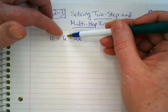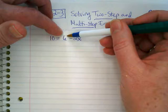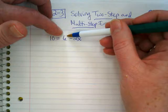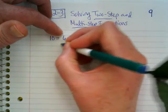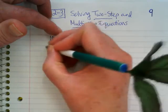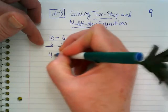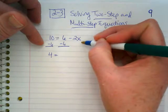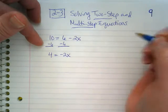So when I see this 6, it's a positive 6. It's got an invisible plus sign in front of it. What's the opposite of positive 6? We're going to do the negative 6 on both sides. 10 minus 6 gives us 4. And on the right side of the equation, what does that leave us with? Negative 2x. Now we're down to a one step.